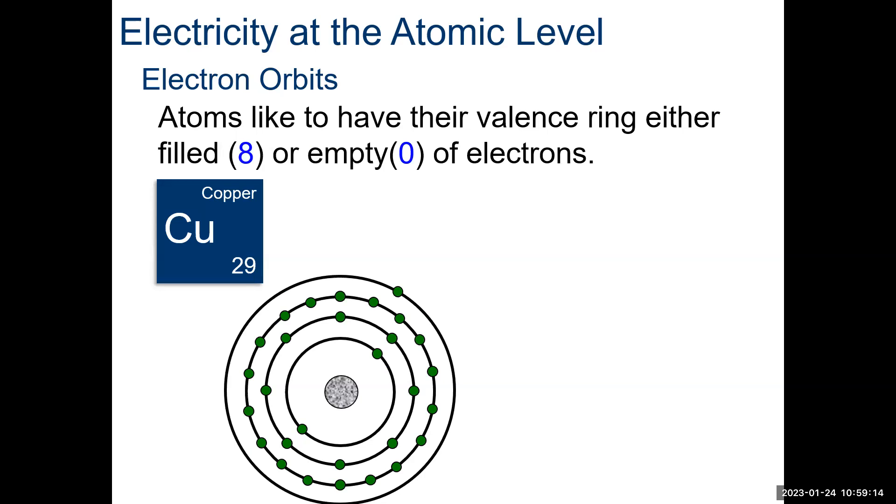All right. So, let's look at copper. Most of us know that copper is a conductor. Sorry about that, if that's a spoiler alert. Atoms like to have their valence ring either filled, fully eight, or empty, zero, but they don't really like it partially filled. Copper has one electron in its valence orbit.